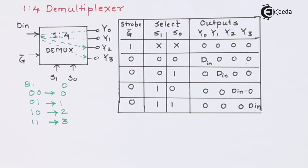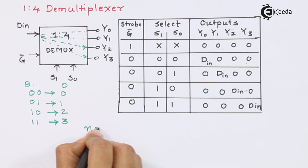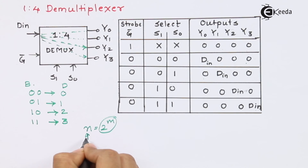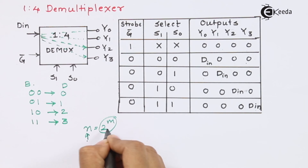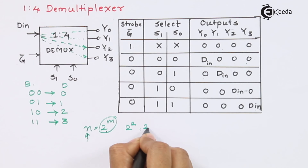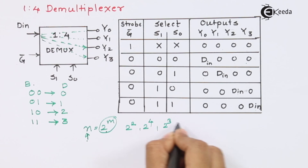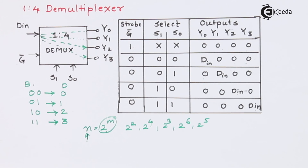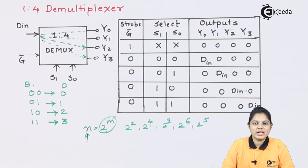Likewise, you can design a D-multiplexer for 1-to-8, 1-to-16, 1-to-32, 1-to-128, and so on — the number of outputs must always be in 2 raised to M format. That means N must be a power of 2, such as 2 raised to 2, 2 raised to 3, 2 raised to 4, 2 raised to 5, 2 raised to 6, and so on. These are the allowed values and you can design the D-multiplexer accordingly. I hope you have understood D-multiplexer. Thank you for watching this video.